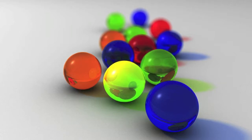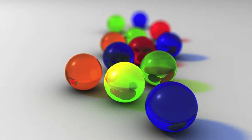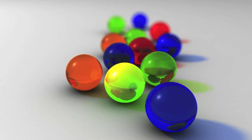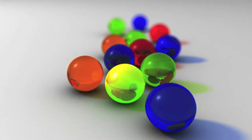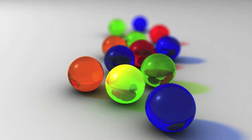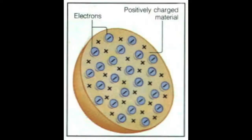Up until this point, because of the work of John Dalton, JJ Thomson and everyone else thought that atoms were positively charged spheres, kind of like marbles. But after the cathode ray experiment and the discovery of electrons, Thomson decided there was a need for a new model of the atom. He said that atoms were positively charged spheres with the negatively charged electrons mixed in. This model became known as the plum pudding model.